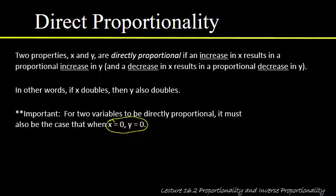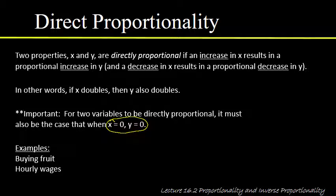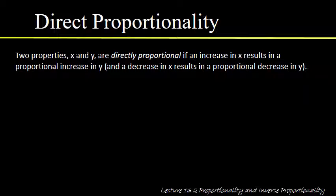Here are a couple of simple examples from daily life. Buying fruit: if you buy one pound of apples it costs $2.49, two pounds costs twice as much. The cost of apples is directly proportional to the amount you buy. Same with hourly wages: if someone earns $15 an hour, two hours earns $30, four hours earns $60 — wages are directly proportional to hours worked.